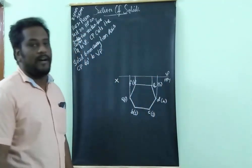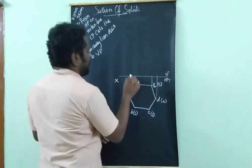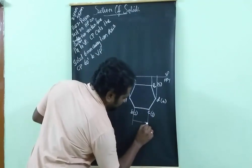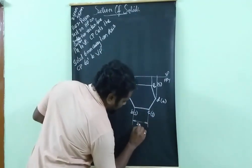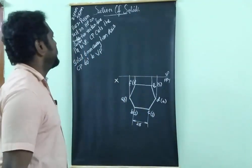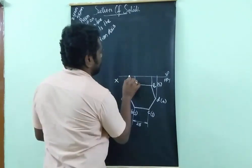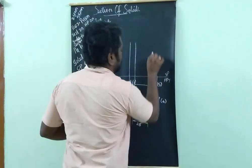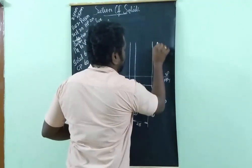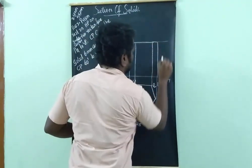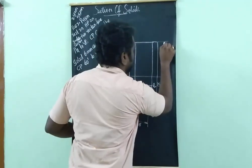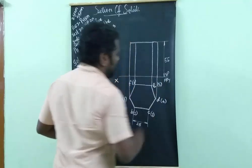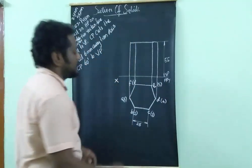Extend all the corners to draw the front view. This dimension is 25 mm. The axis given is 55 mm, so draw the axis here measuring 55 mm.